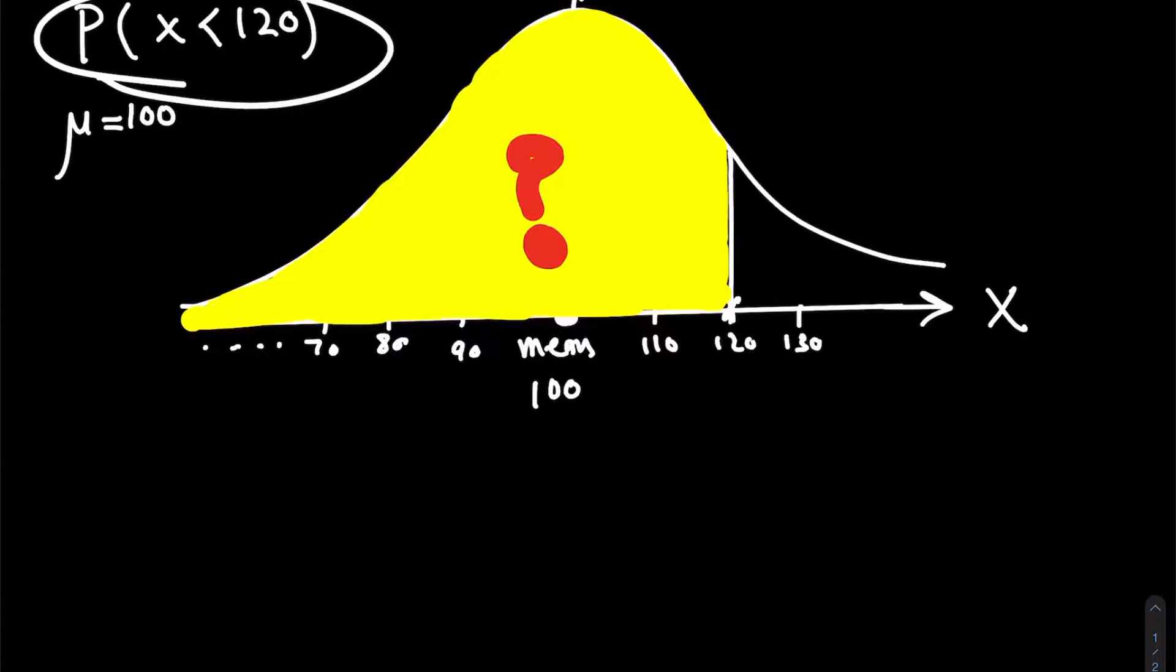And the way you calculate this area here, the yellow area, the way you calculate this yellow area is basically either use calculus, which we're not going to use, or we're going to use a simple Excel command to calculate it. So that's all that's happening and changing from module 3 to module 4.